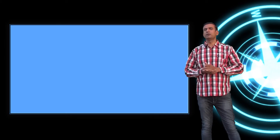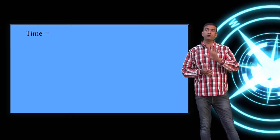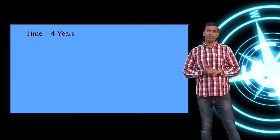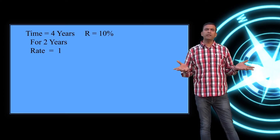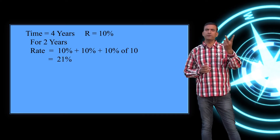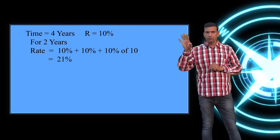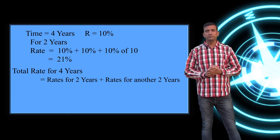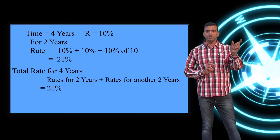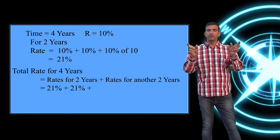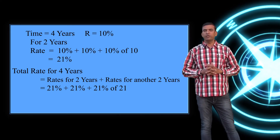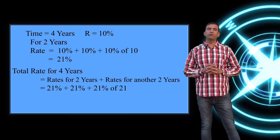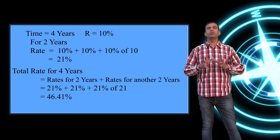For four years, example: rate = 10%. For two years: 10 + 10 + 10% of 10 = 21%. Four years is two years plus two years, so: 21 + 21 = 42, plus 21% of 21 = 4.41, giving a total rate of 46.41%.